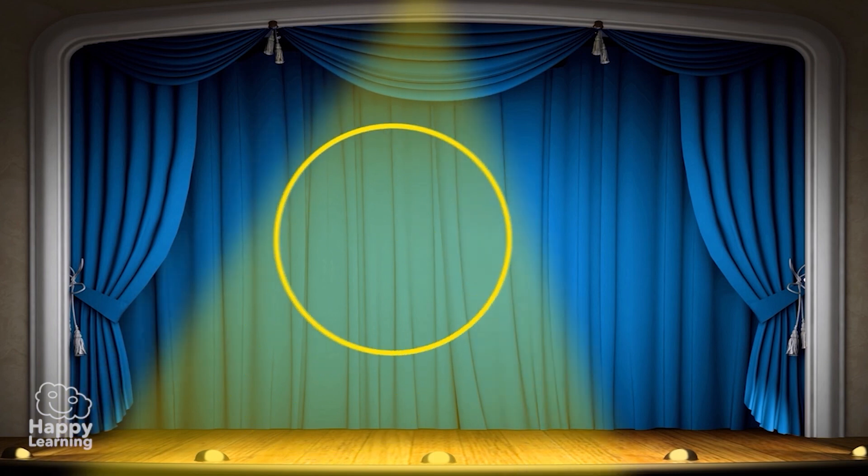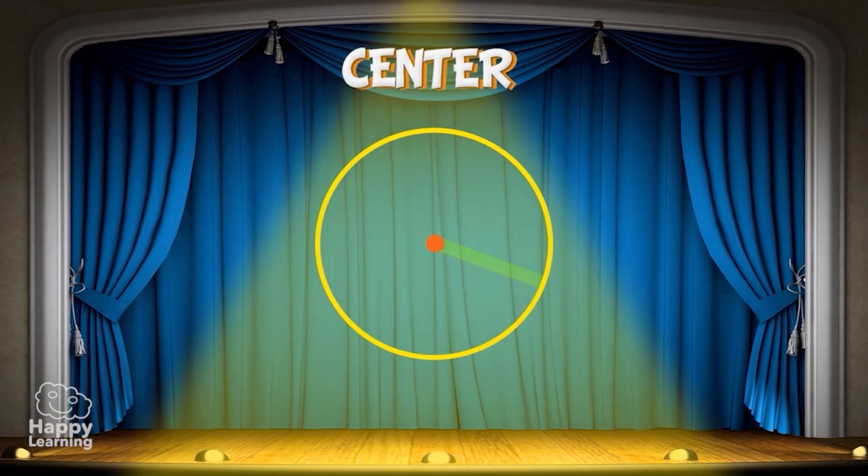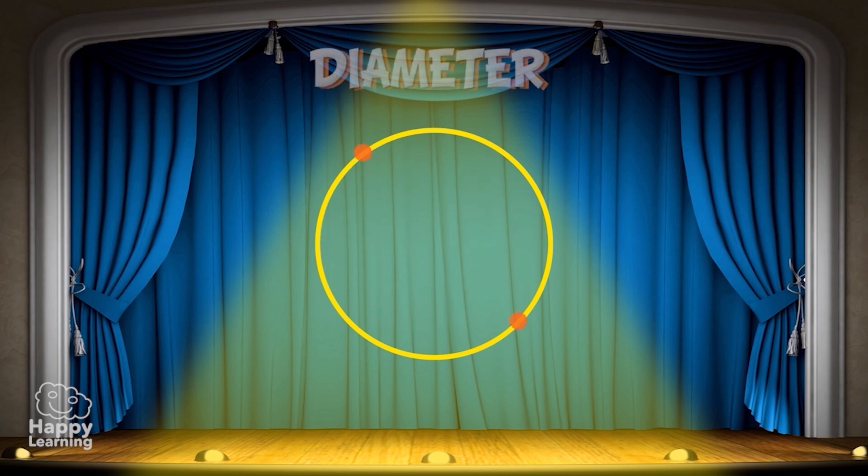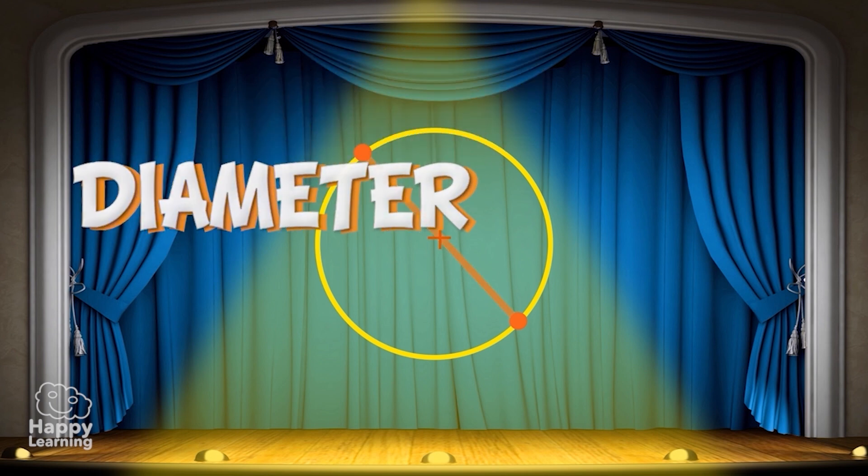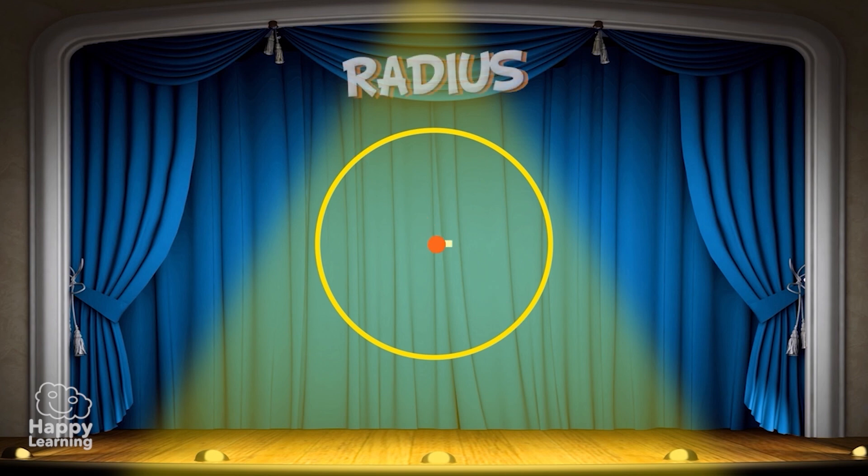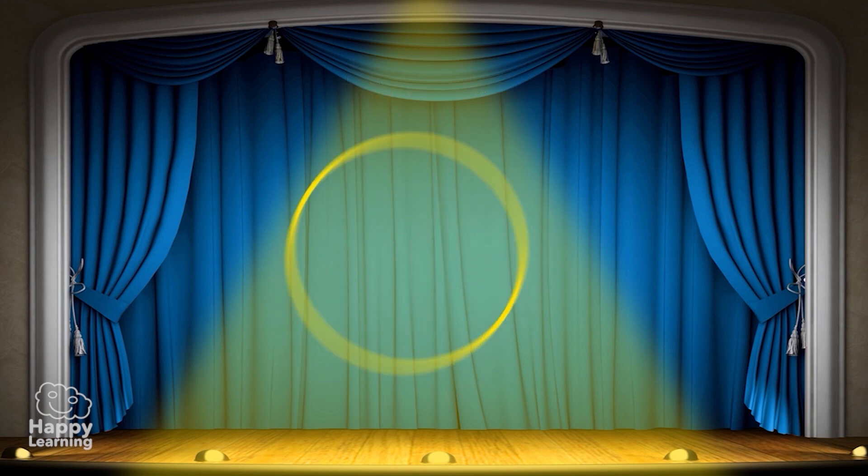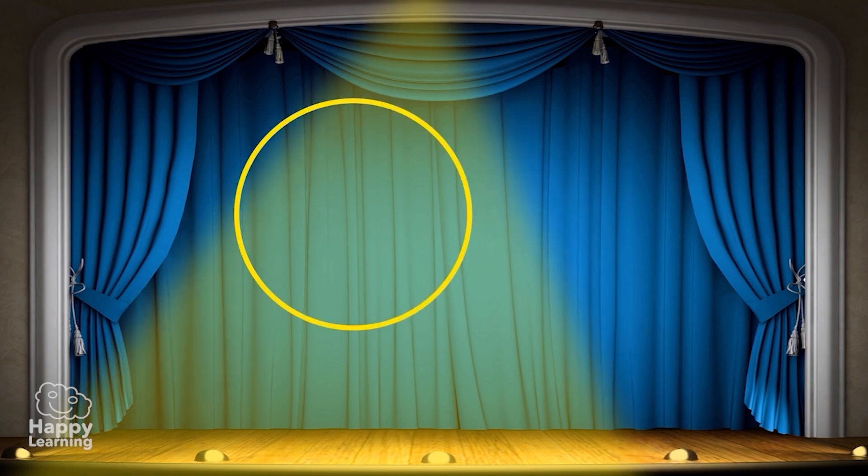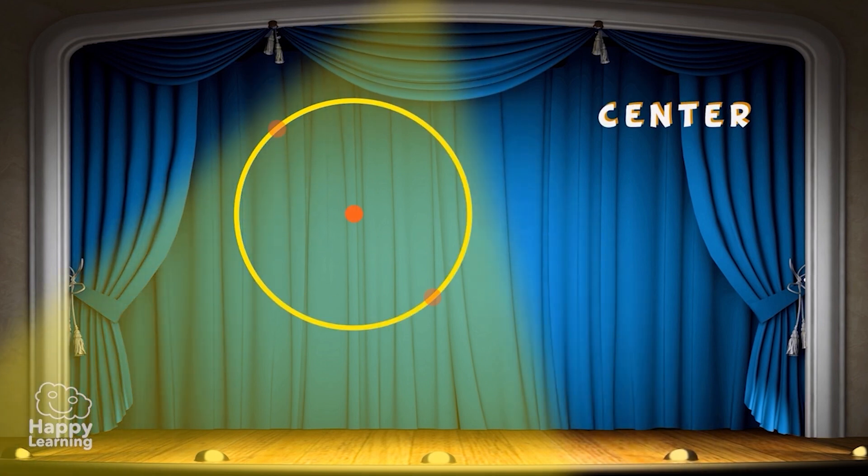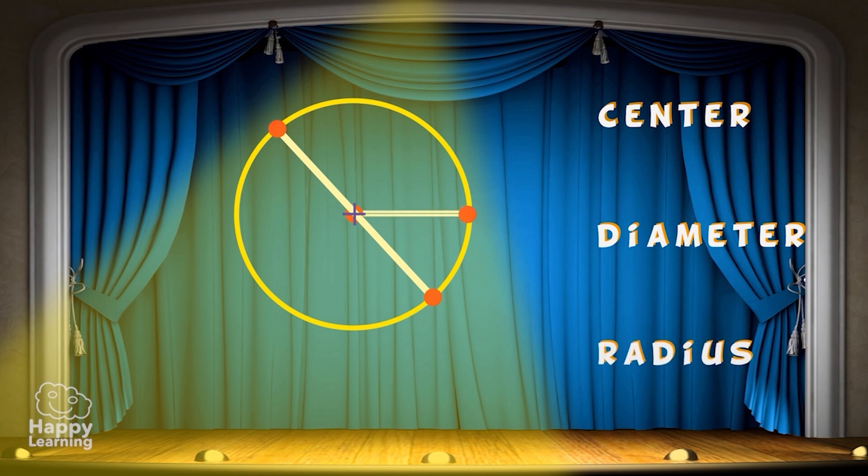And now let's learn about the elements that make up a circumference. The center is the point which is at the same distance to any other point from the circumference. The diameter is the distance across the circle through the center. And the radius of a circle is the distance from the center of a circle to any point on the circle. Fantastic! These are the three most important elements in the circumference: the center, diameter, and radius.